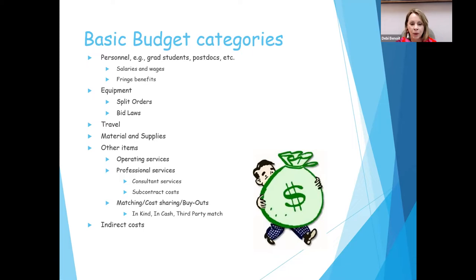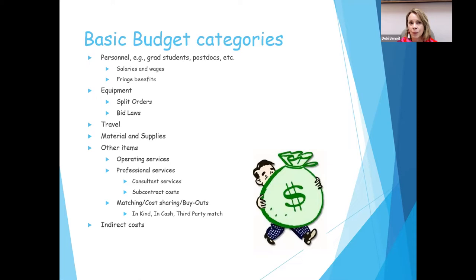I'm going to talk about the equipment or acquisition part of the application. Here's where it might be a little bit different. Our university says anything over a thousand dollars is equipment. If you're dealing with a federal grant, they will tell you anything over $5,000 is an equipment purchase or acquisition. So that becomes a little complicated. The way we resolve that here is we ask for an internal and an external budget, so it helps the controller's office manage the budget and know where the line items fall — it has ended up being easier that way.